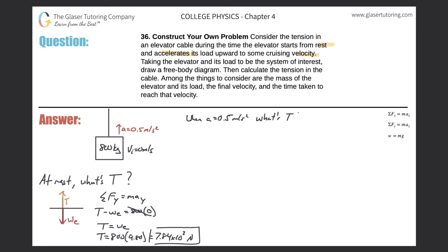What's the tension in the cable now? For the free body diagram: the force pointing downward is the weight of the elevator — not the mass, the weight. Then we have some tension in the rope pulling it upward; we don't know its value yet, so we call it T. We do know the acceleration is 0.5 meters per second squared upward.